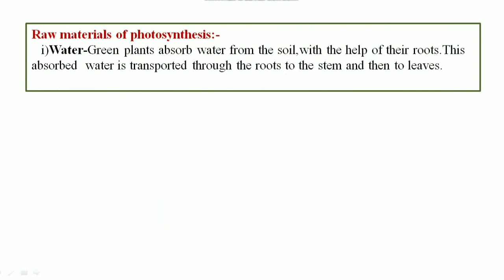Let us know the raw materials required for photosynthesis. First is water. As we know the plants absorb water from the soil with the help of their root system and this absorbed water is transported through the roots to the stem and then to the leaves.